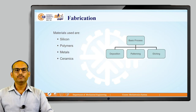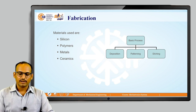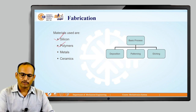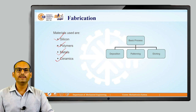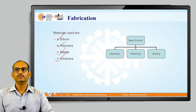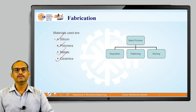What are the different materials used for MEMS fabrication? They are silicon, polymers, metals, and ceramics. These are similar materials used for preparing regular sensors or mechatronic systems. However, the manufacturing processes used for fabricating MEMS are different.